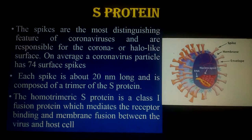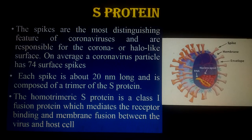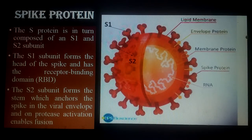The spikes are the most distinguishable feature of coronaviruses and are responsible for the halo-like surface. On average, a coronavirus particle has 74 surface spike proteins, and each spike is about 20 nanometers long. The S protein is a class one fusion protein because it helps in the fusion and attachment of the coronavirus to the host cell, mediating receptor binding and membrane fusion between the virus and the host cell.